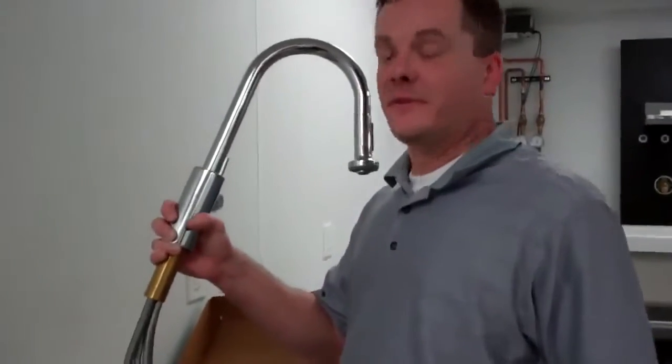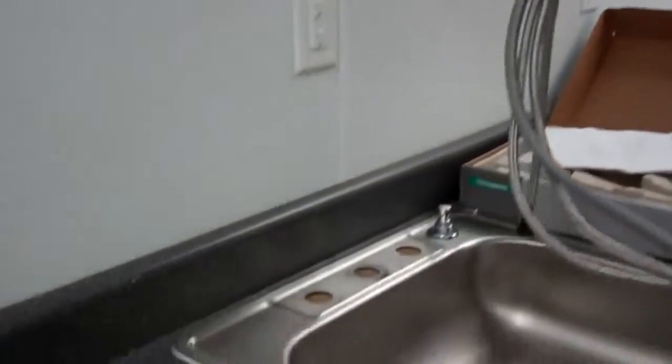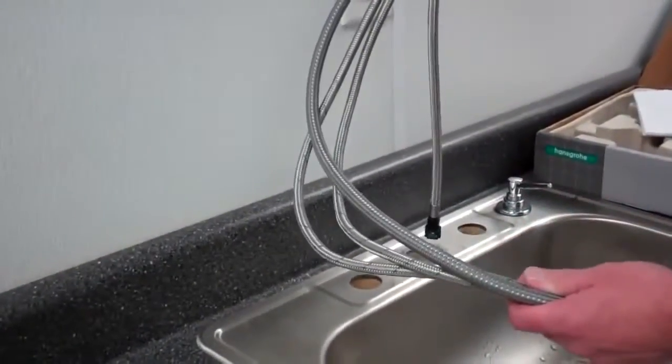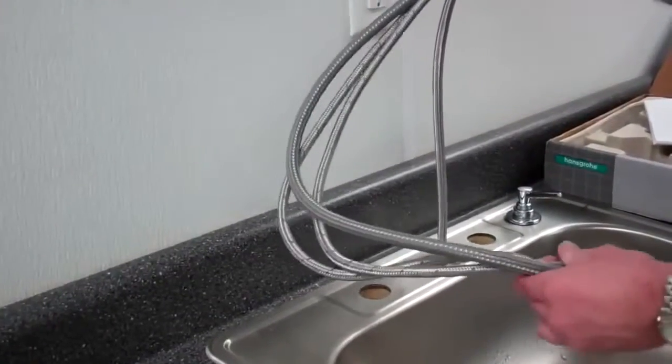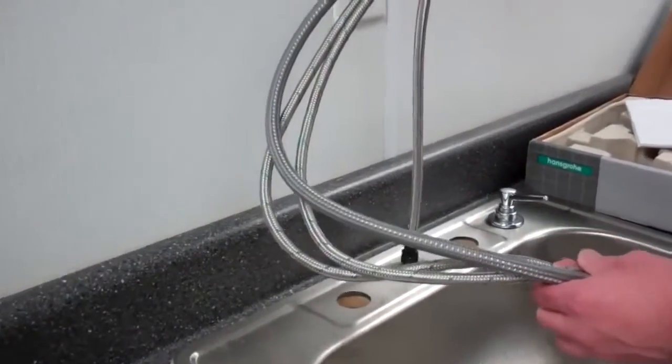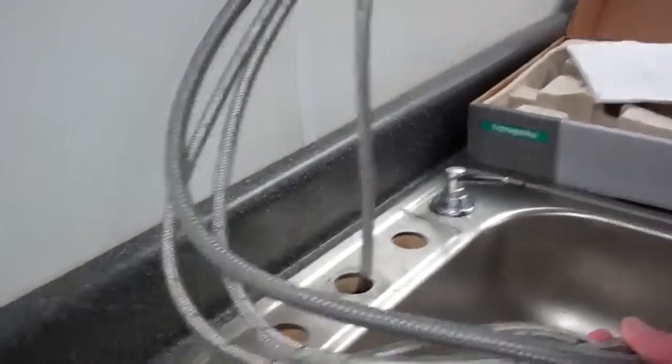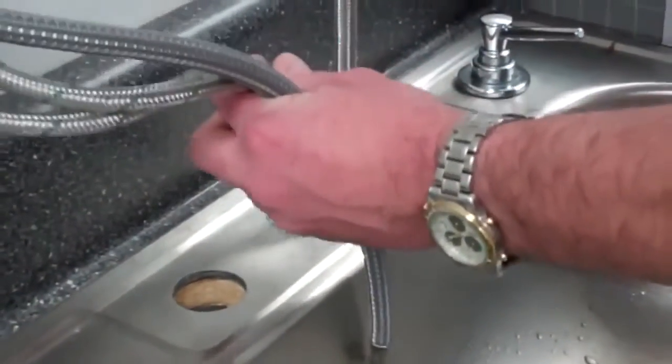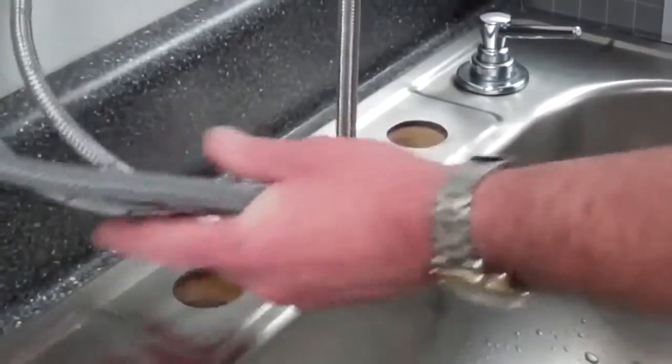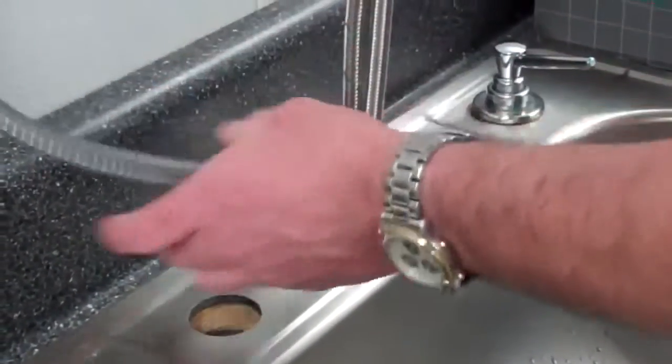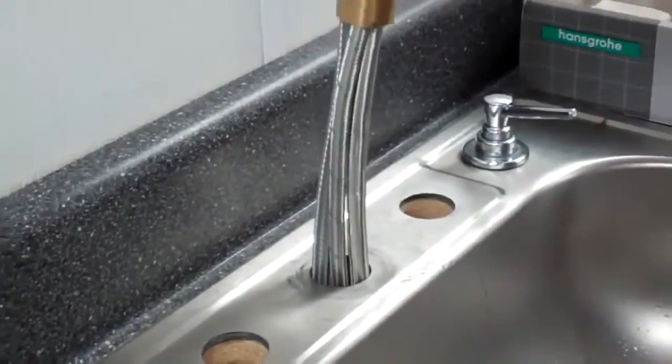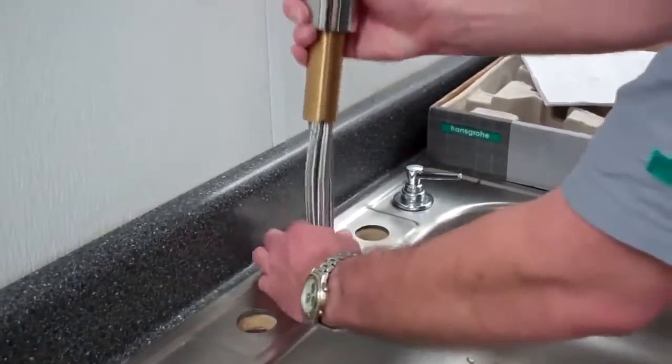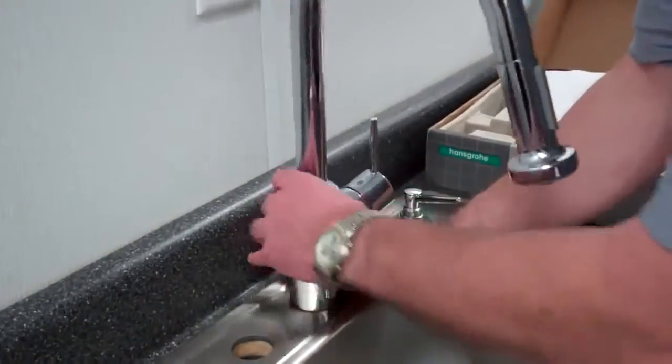The first step in the process after removing it from the box is installing the faucet into the kitchen sink mounting hole. One helpful hint to remember is to insert the black and green snap connector first, then go with your hot and cold supply hoses. That way everything fits through the hole neat and easy. Then drop it all the way down.